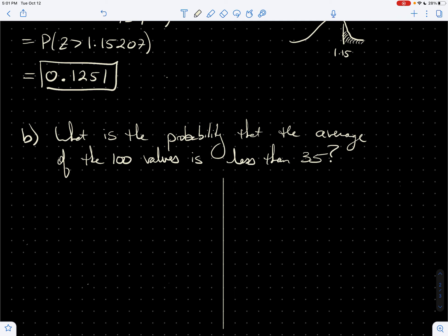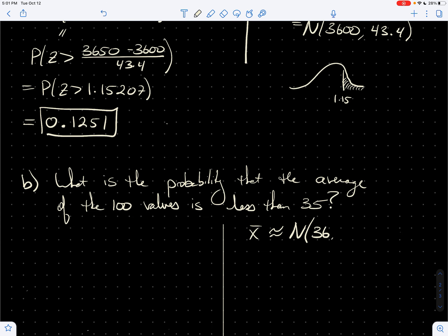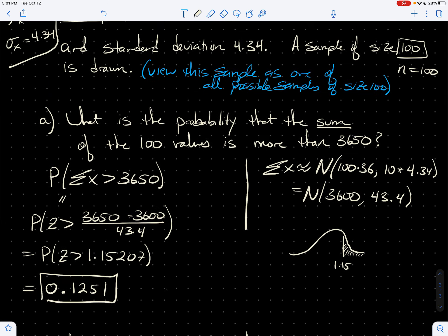the average of all possible samples is also normally distributed. So X bar is normally distributed with mean the same as the original mean, which I believe was 36. Yep. And then it's the original standard deviation, 4.34.